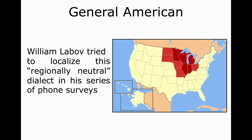However, as RP, which is considered to be regionally neutral for Britain, is still associated with the Southern English varieties, scholars tried to localize General American as well. Here I should mention William Labov, who tried to pinpoint General American in his series of telephone surveys. He found out that the closest regional variety to General American is located in the northern states of the country, between Minnesota and Michigan. Thus, one can cautiously talk about the origin of General American. This dialect is characterized by a number of conservative phonological features, which I'd like to discuss in great detail.